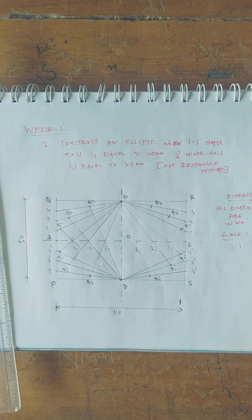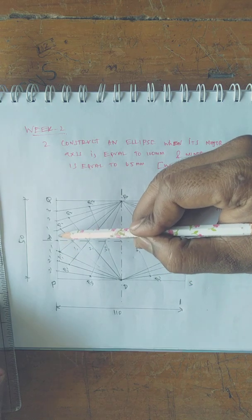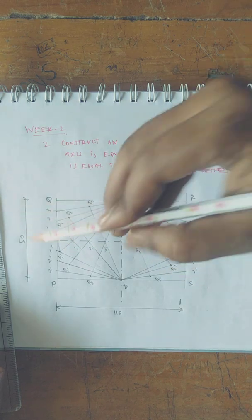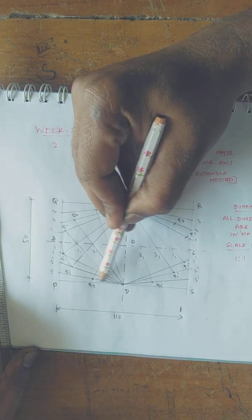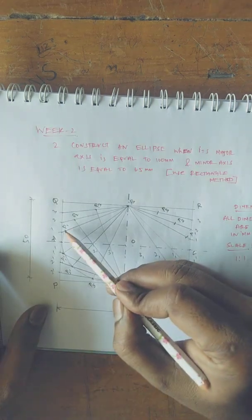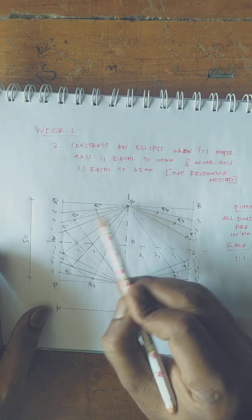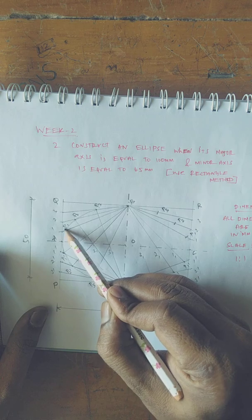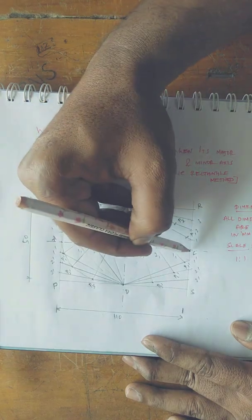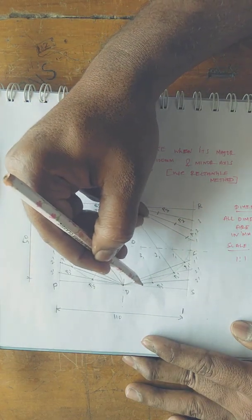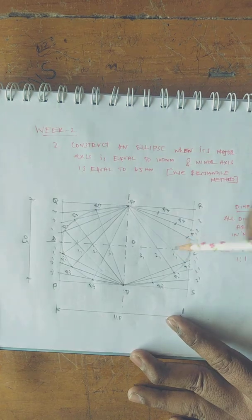Connect these paths by a smooth curve. If you are reducing the division, your accuracy will be very less. One by one you have to finish. That's it now.